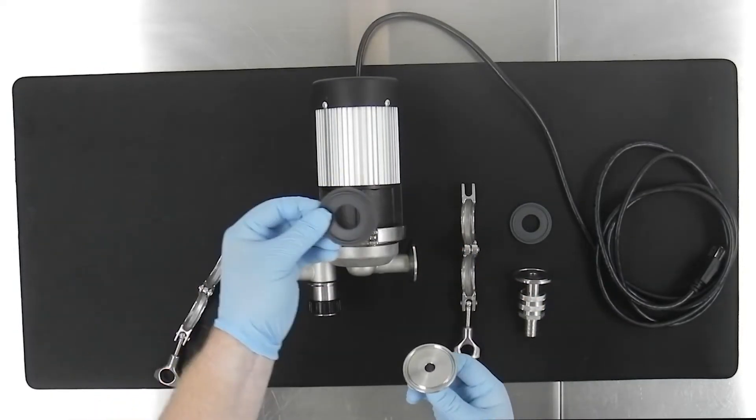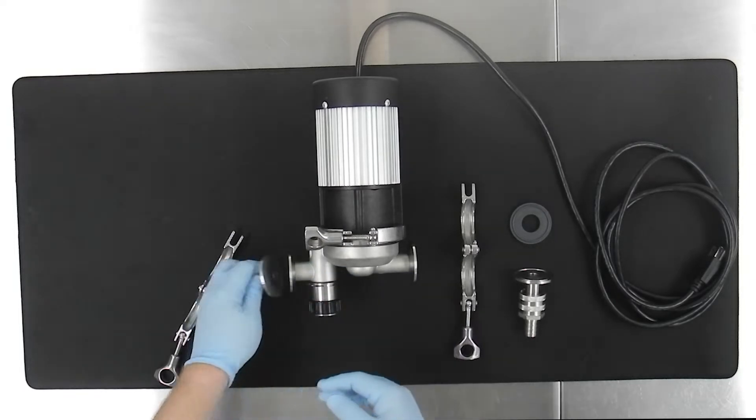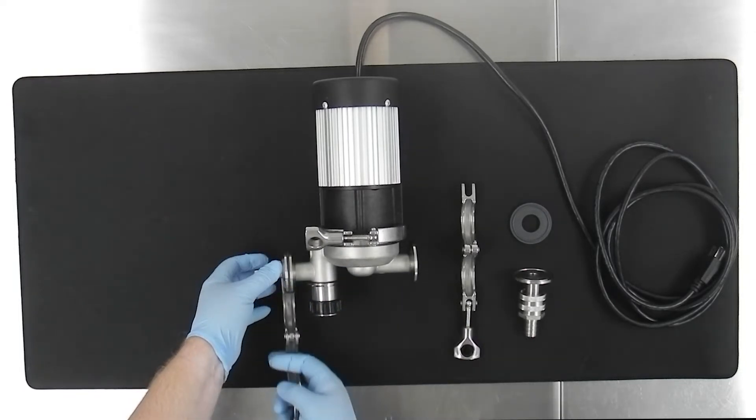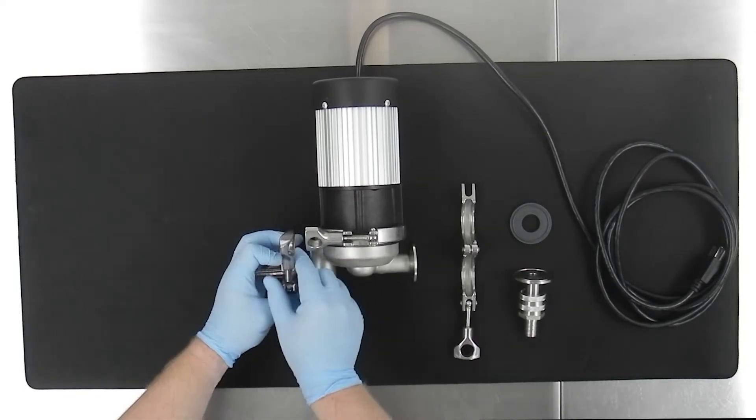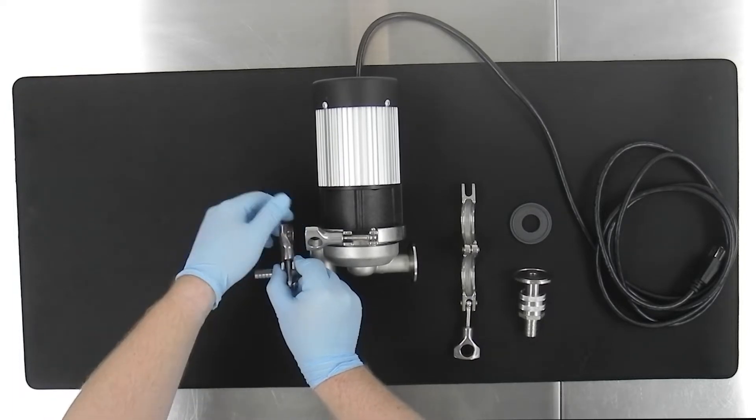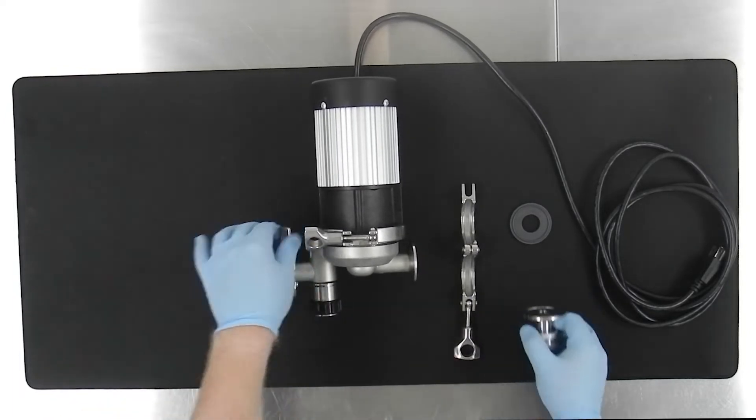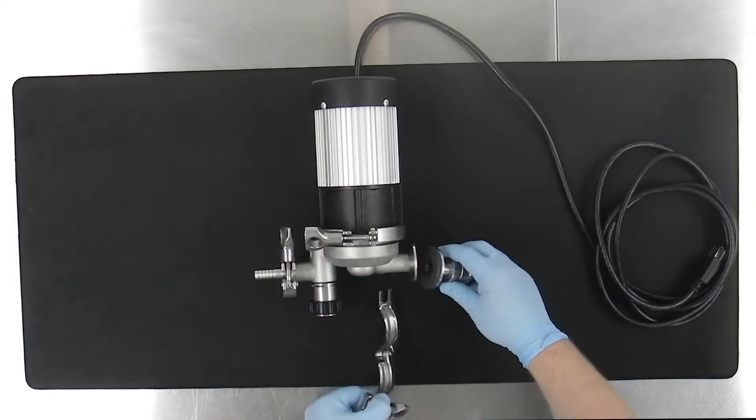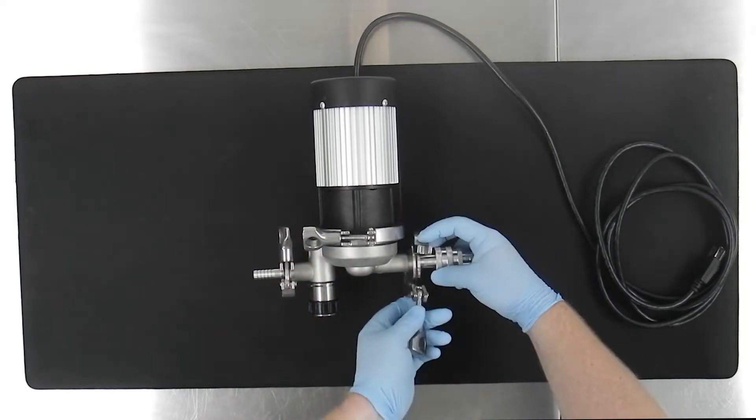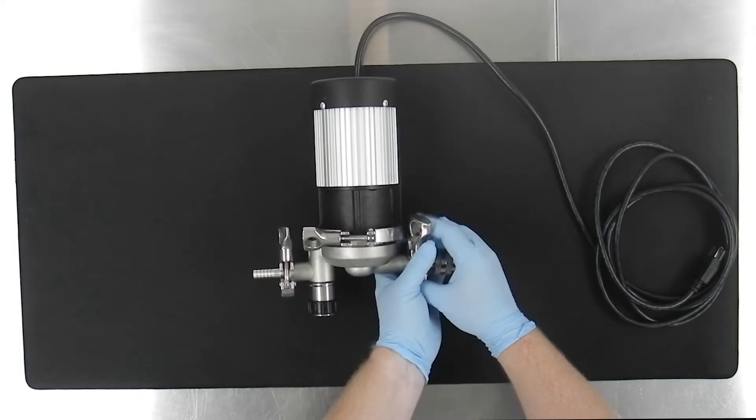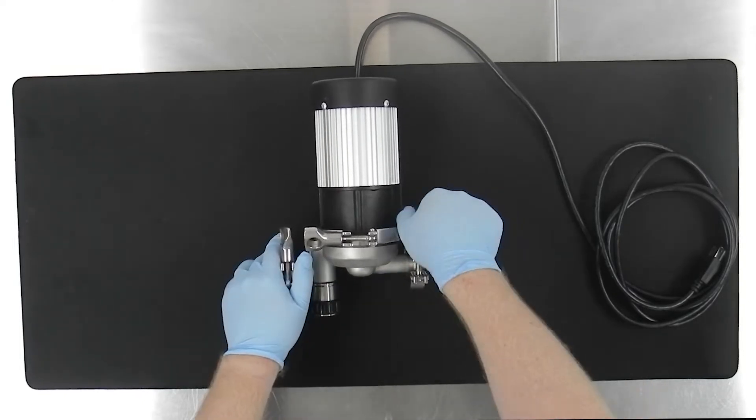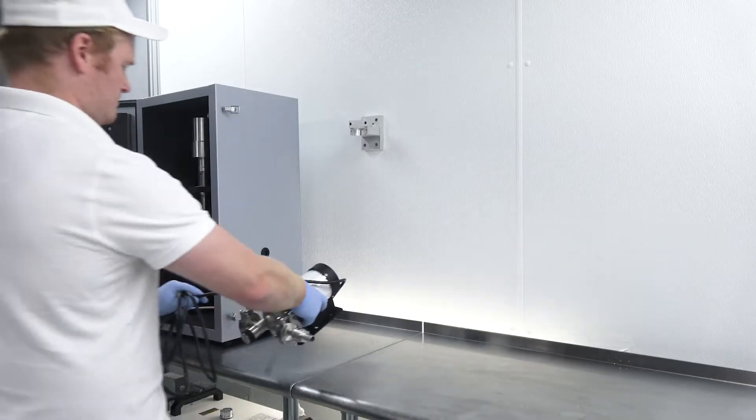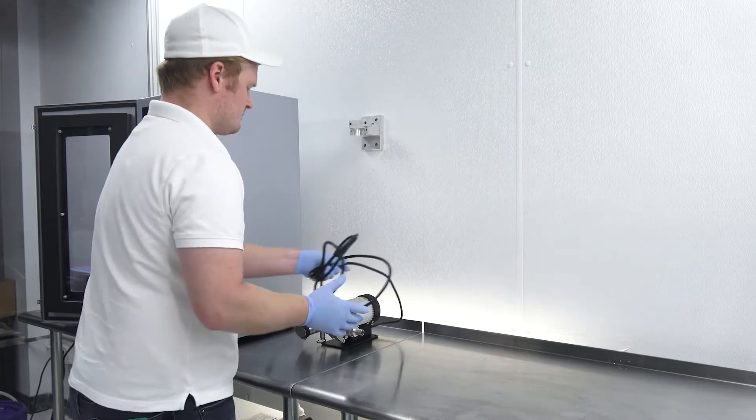Now we install a hose barb adapter on the pump outlet, and a quick disconnect adapter on the pump inlet. Now we place the pump to the right of the sound enclosure.